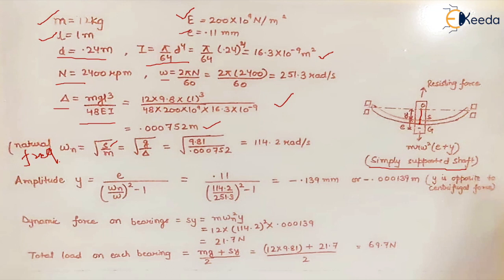This natural frequency is also equal to √(g/Δ) because it resembles the resonance condition. Delta we have already calculated, g is known, so the natural frequency is 114.2 rad/s and the rotational speed is 251.3 rad/s. We observe that ω is greater than ωn.